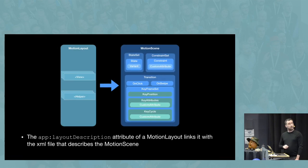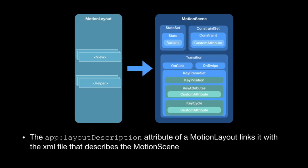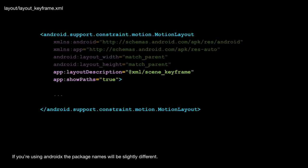The components that make up MotionLayout — you've got two main parts. On the left-hand side, you have your layout.xml file with all your widgets and views. On the right-hand side, you've got your new scene.xml file, which contains your constraints, your transitions, and any keyframes you might have in your animations. You can have triggers for onClick and onSwipe to start your animations. The relationship between the two is a layout description tag in your XML file that links from one to the other.